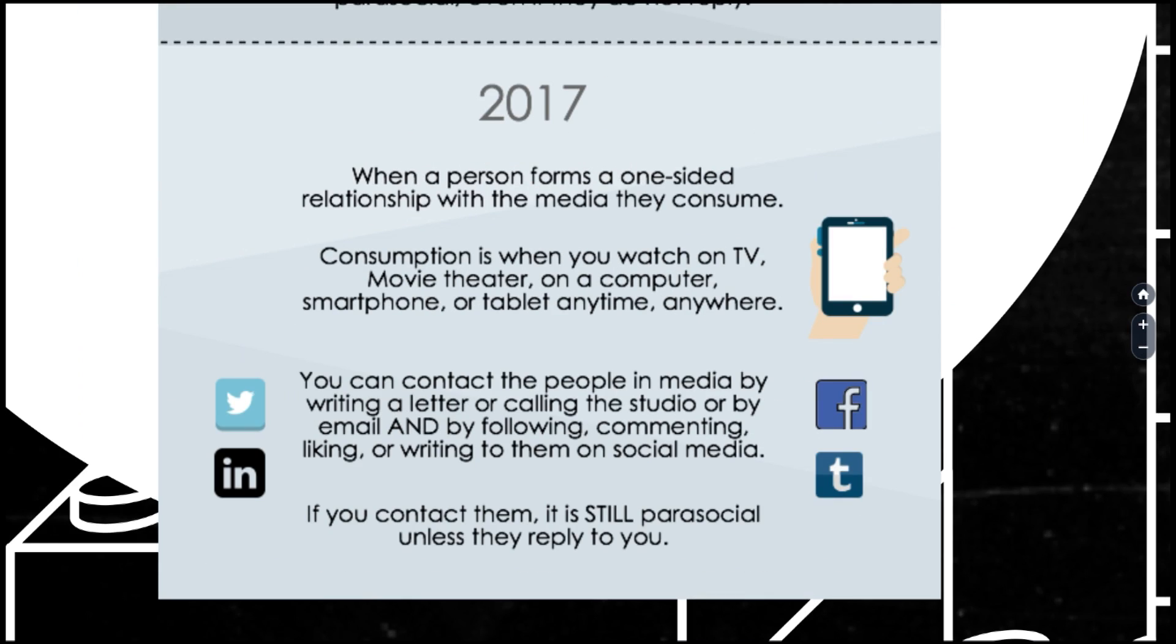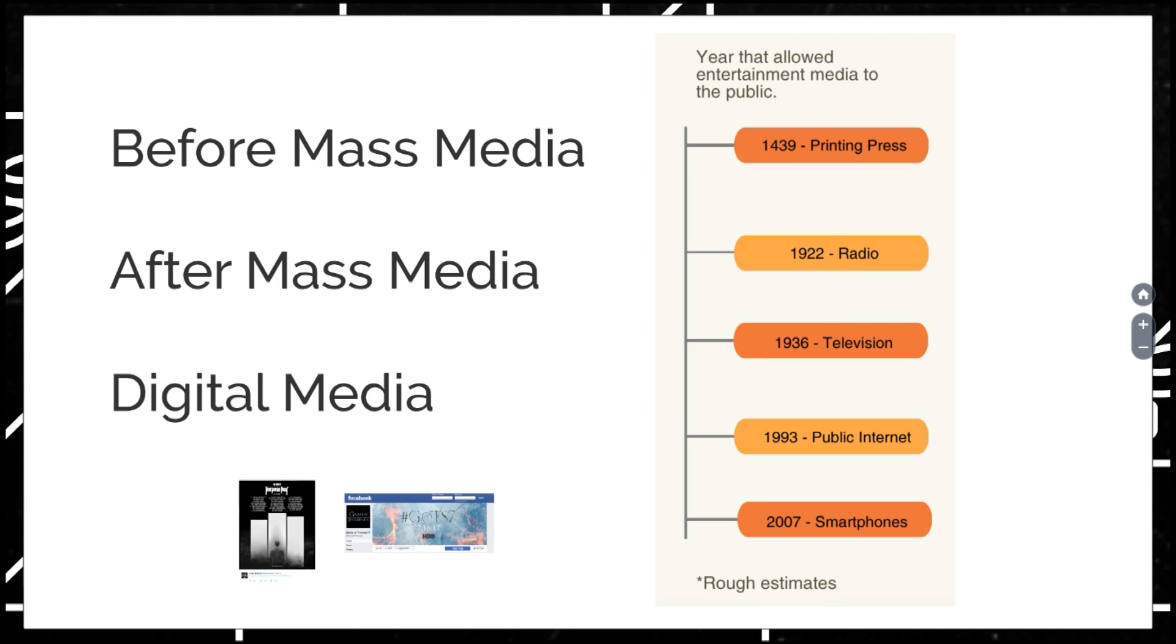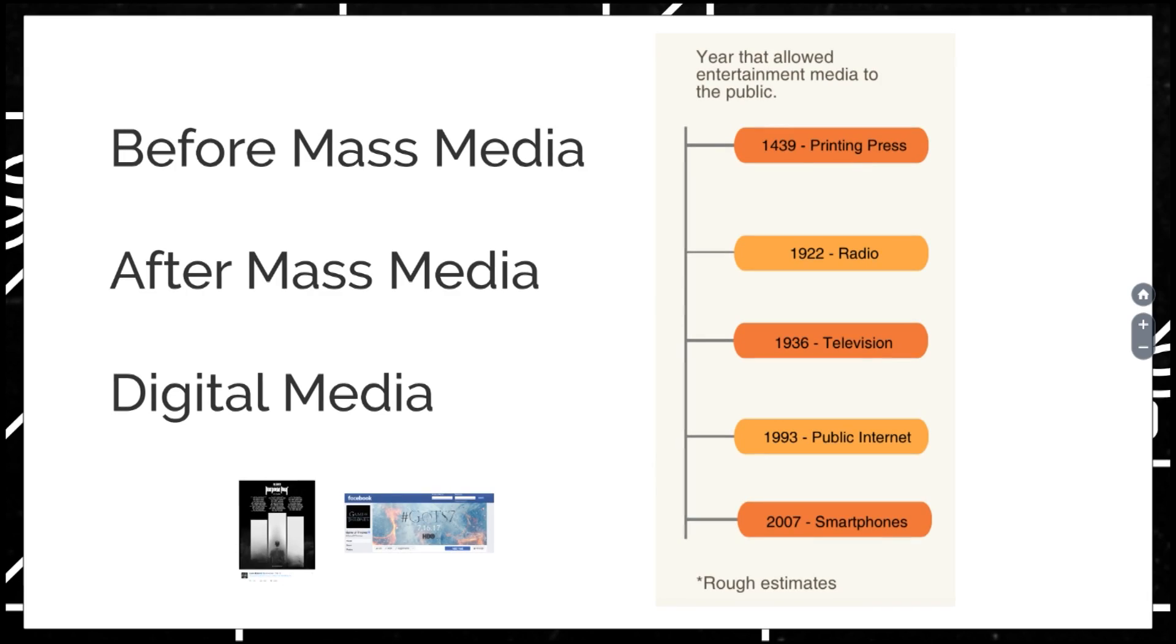So how did I come up with this and what did I do my methods with? Well, I've read literature that started from the 50s up to the present about parasocial relationships, did a little research on entertainment before and after technology really took over. So as you can see, this is rough estimates of when forms of entertainment could be given to a person directly to them.